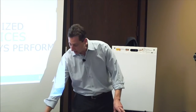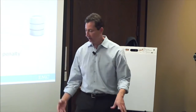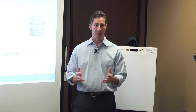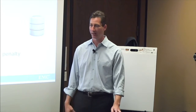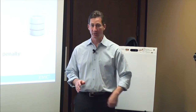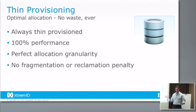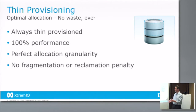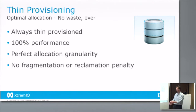The first thing we have is thin provisioning. Every volume on XtreameIO is thin provisioned. We do not ever thick provision anything. This is important in the world of flash because it is a more expensive media, so we want to make sure we're perfectly allocating space only to what we need to store. The net unique data that goes into the array, we allocate space for it on demand, and that's all we ever have to do.